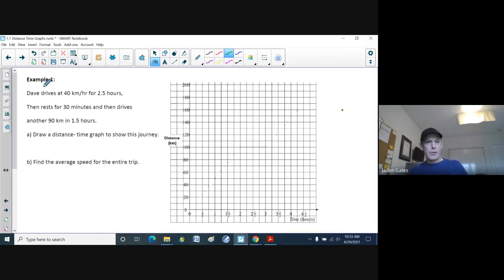And so this is example one here, where Dave drives at 40 kilometers an hour for two and a half hours, then rests for 30 minutes, and then drives another 90 kilometers in 1.5 hours. Draw a distance time graph to show his journey. So what I can do is, first, I'm going to start with my blue line here. Dave drives 40 kilometers an hour for 2.5 hours. So you see in my graph here, I have hours down the bottom, kilometers up top.